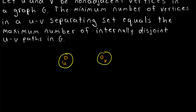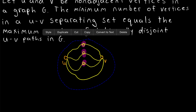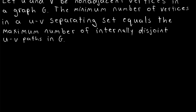If we've got these two non-adjacent vertices u and v, and we need to delete, say, three vertices at least in order to disconnect them, it seems reasonable that there must be a maximum of three internally disjoint paths connecting those vertices. If there was a fourth, then obviously deleting three vertices wouldn't be enough to completely disconnect the vertices. So I think it's pretty intuitive, but if you want more of an introduction to the theorem, check the description for a link to that lesson.